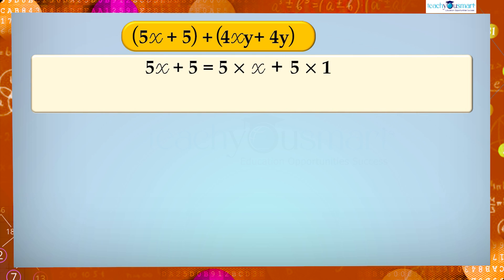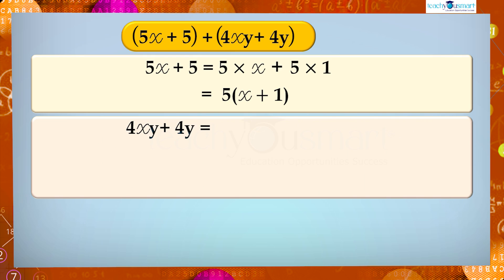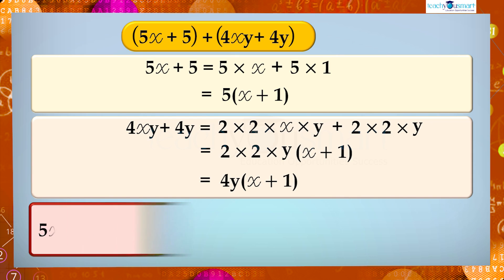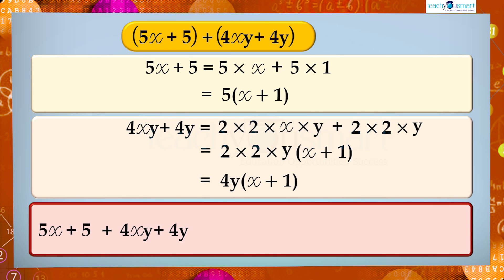We can write 5x + 5 as 5 multiplied by (x + 1). Also, 4xy + 4y equals 4 multiplied by y multiplied by (x + 1), which equals 4y(x + 1). So 5x + 5 + 4xy + 4y equals 5(x + 1) plus 4y(x + 1).